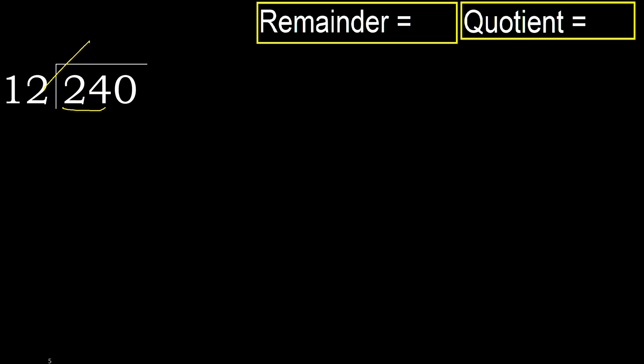Multiply by which number is nearest to 24, but not greater? 12. Multiply by 3: 36 — it's greater. Multiply by 2: 24 — it's not greater.